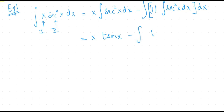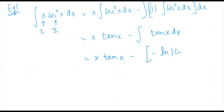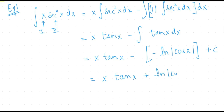Continuing the first example, dx remains as it is, and the integral of tan x is minus log|cos x|. So the final answer becomes x·tan x + ln|cos x| + C.